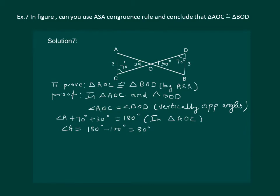Similarly, in the other triangle that is BOD, we have angle B plus 70 degrees plus 30 degrees equal to 180 degrees as sum of the angles of a triangle is 180 degrees. So we get angle B equal to 180 degrees minus 100 degrees which is equal to 80 degrees.